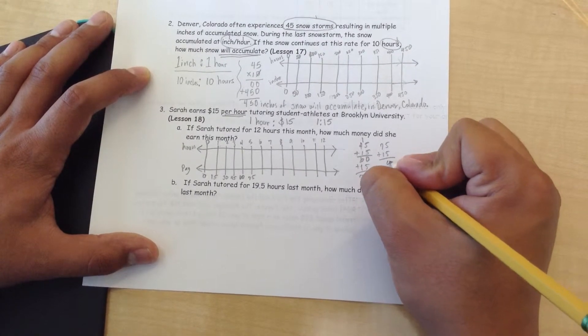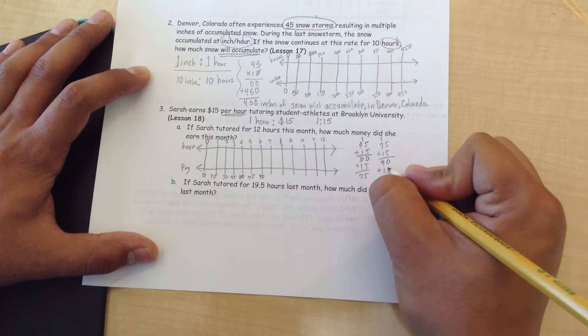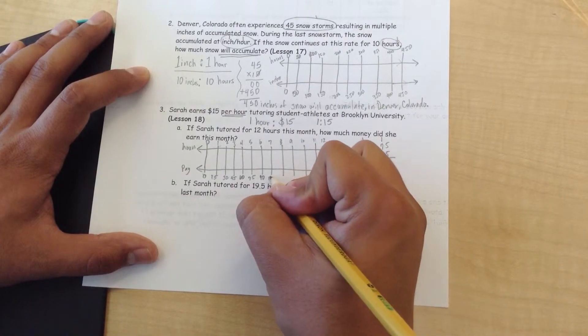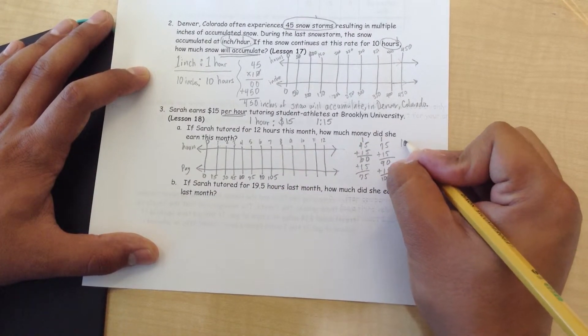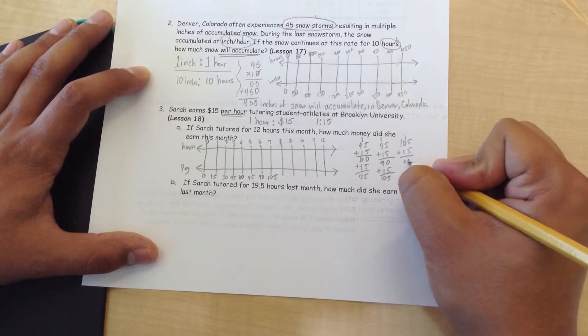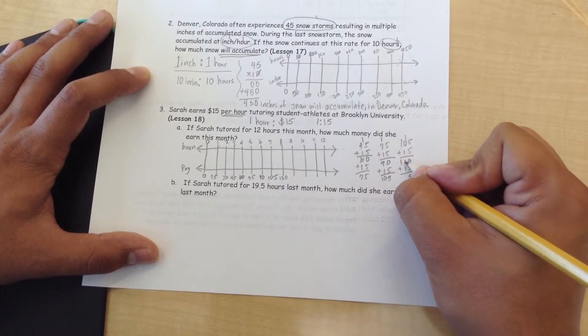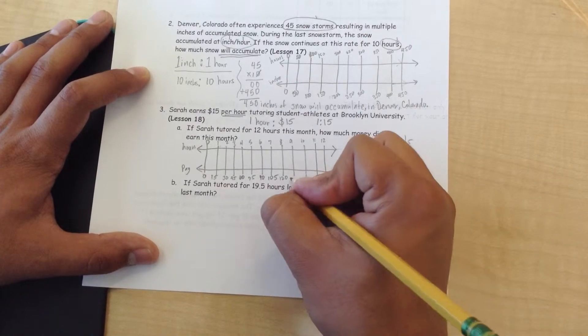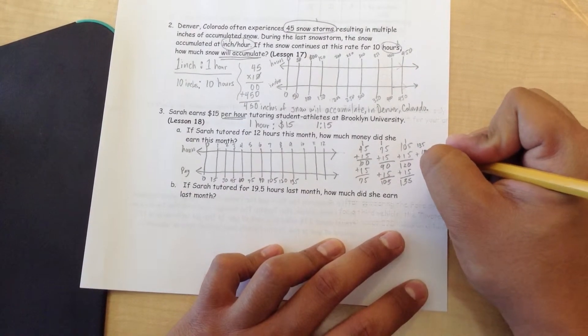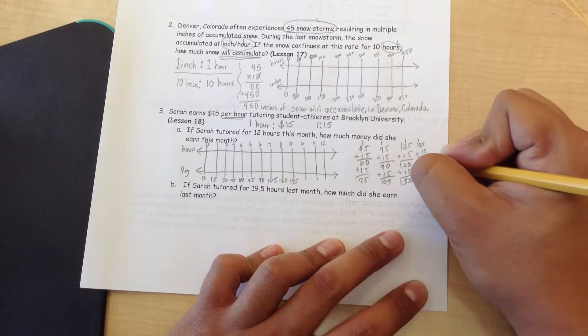Continuing on. 75 plus 15, that equals 90. 90 plus 15, 0 plus 5 is 5, 9 plus 1 is 10, 105. 105 plus 15, 5 plus 5 is 0, carry the 1 over, 1 plus 1 is 2, plus 1. 0 plus 5 is 5, 2 plus 1 is 3, 135. 135 plus 15, 5 plus 5 is 0, carry the 1 over, 1 plus 3 is 4, plus 1 is 5, plus 1 is 150.